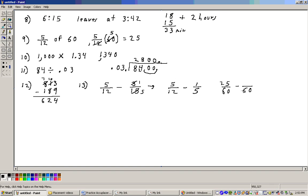5 times 5 is 25. 5 goes into 60 12 times. 12 times 1 is 12. Subtract, and you get 13 sixtieths, and that does not reduce.